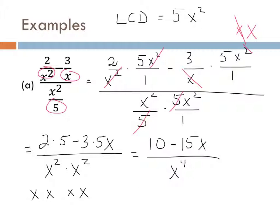We can pull out a factor of 2 from the numerator. Does it look useful? Probably not. But we do it because sometimes when we factor, we can cancel more. If we get lucky, we factored out something and ended up with something that could cancel with the denominator. But no such luck here — we still can't cancel. So this is our answer.